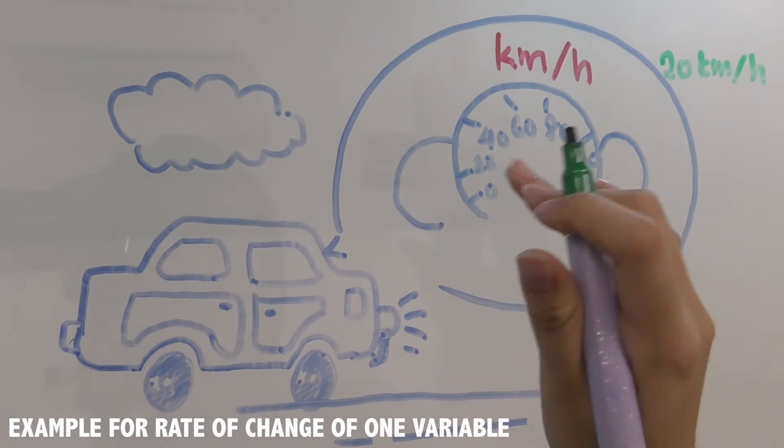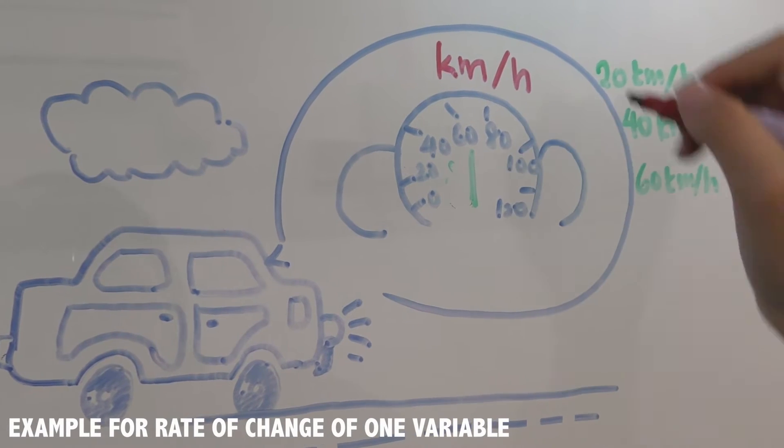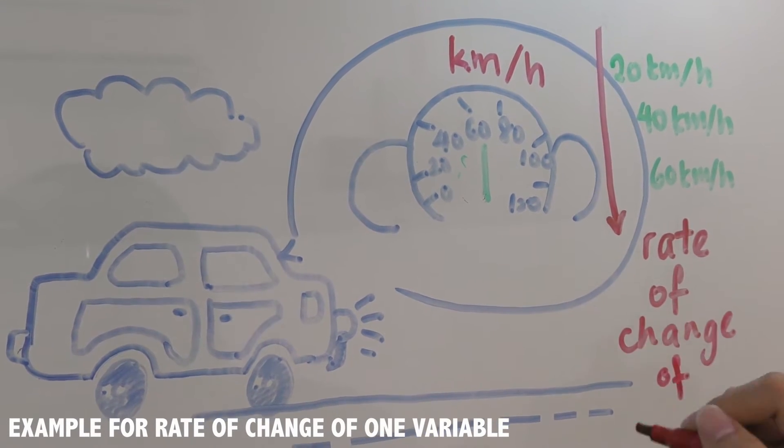This means the car is changing the distance traveled from time to time. And this is what we call the rate of change of distance.